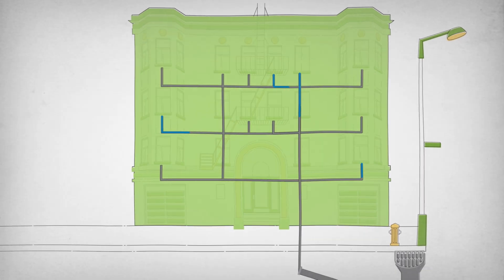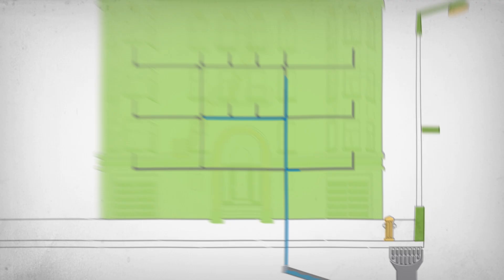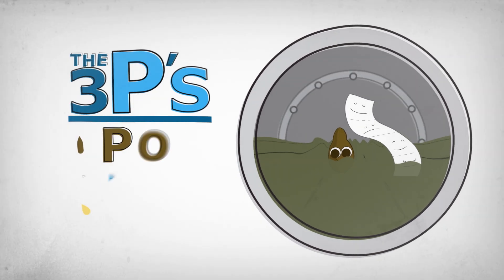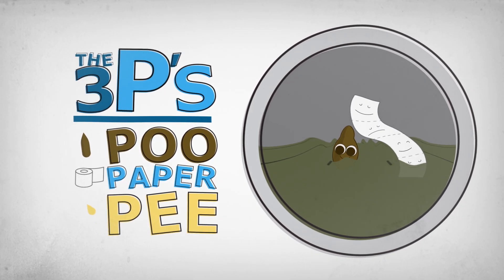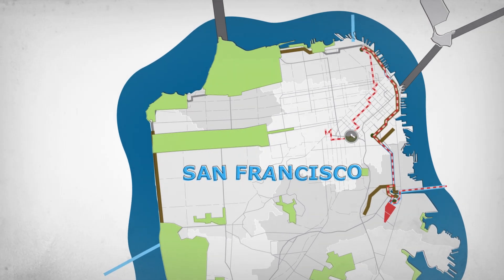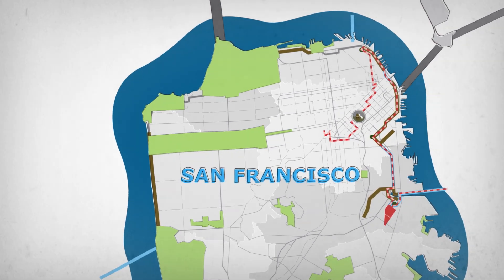First, it goes down the drain, through the building, and then poo goes into the sewer system, along with the other two P's, paper and pee. The sewer system is like an underground maze throughout San Francisco, and everything in the sewer in my neighborhood is heading to the same place.